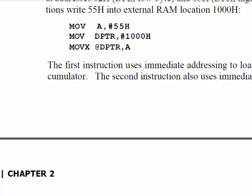As we look at this addressing mode, we're using two different types of addressing. The number sign means immediate data — we're moving the number 55 into A. We're also moving the number 1000 hex into the data pointer. But here we're moving from A, which contains 55, to the memory location pointed to by the data pointer. So this three-line piece of code shows three different addressing modes.